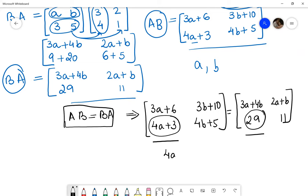So 4A plus 3 will be equal to 29. 4A is equal to 29 minus 3, which will be equal to 26, and A is equal to 26 by 4, which is 13 by 2. So A is equal to 13 by 2.